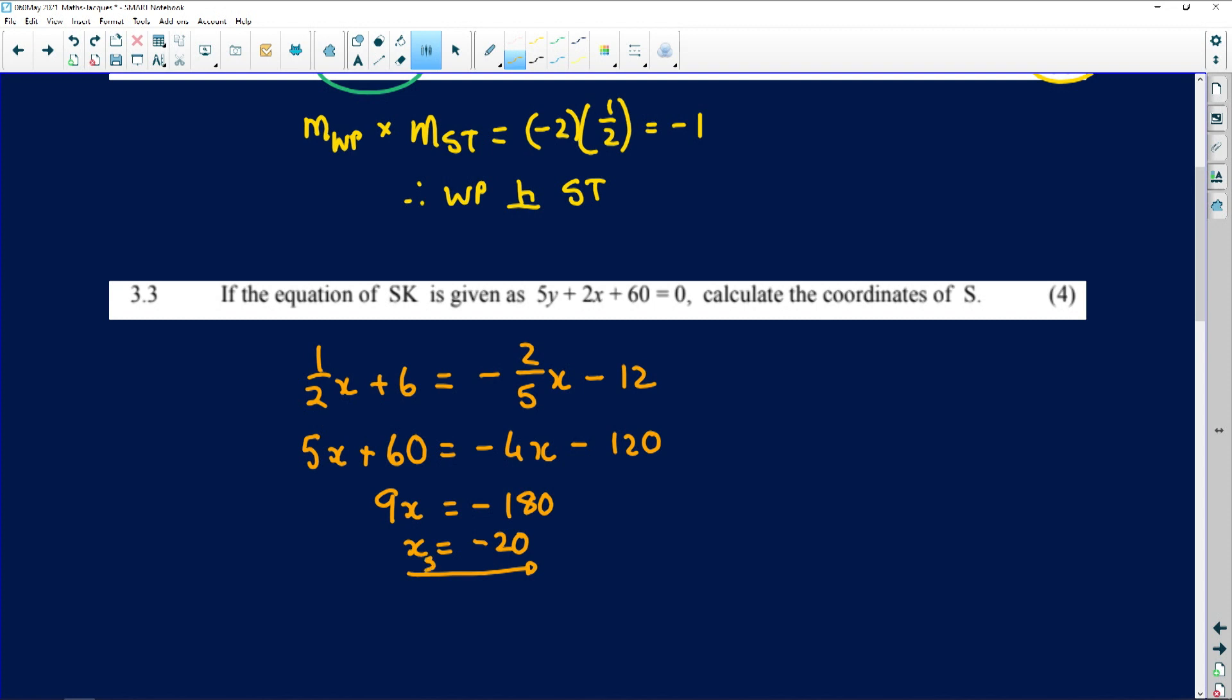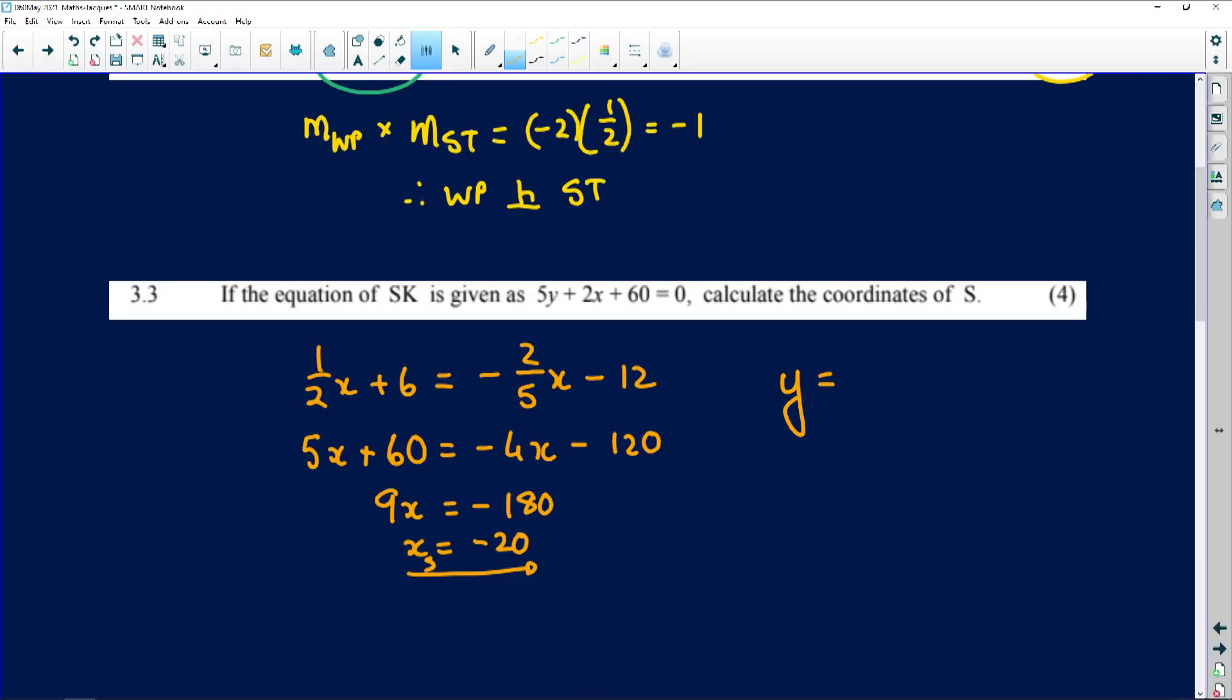So I've got the x coordinate for S so far. Now I need the y coordinate. I go back to any one of those two equations and I plug minus 20 into it. Let's go to the left-hand side one: y equals a half times minus 20 plus 6. So that gives minus 10 plus 6 and that leaves us with minus 4 as the y coordinate for S. So round off beautifully and give your answer in coordinate pair form: minus 20, minus 4 is the coordinates of S.